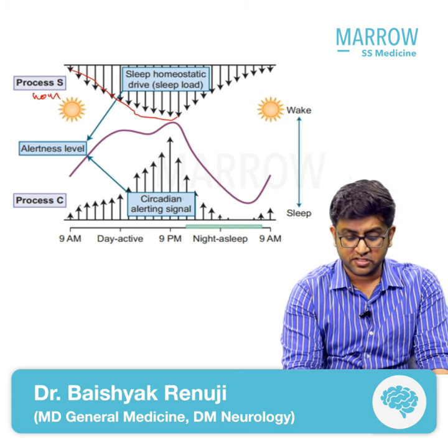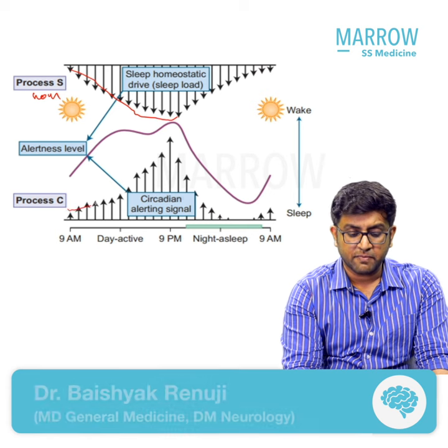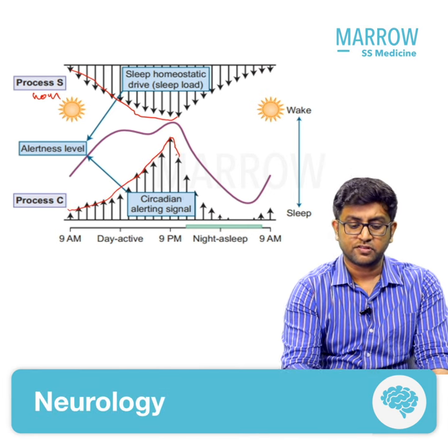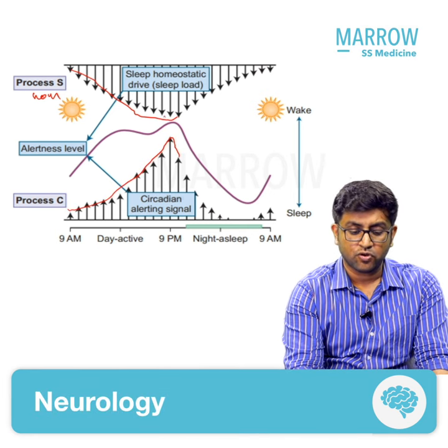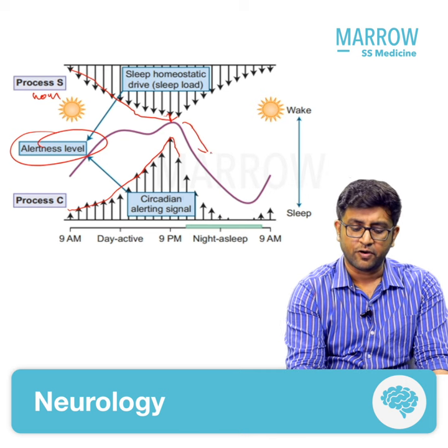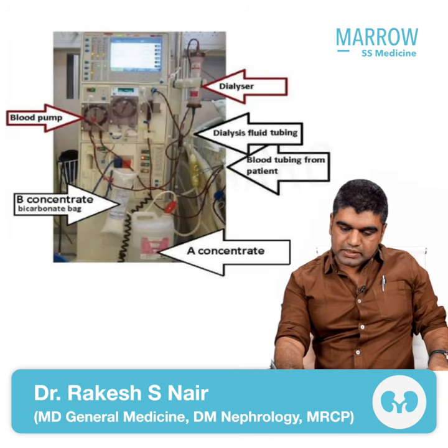This is homeostasis. As the day progresses, it keeps increasing. Sleepiness also has a circadian rhythm and also increases as the day progresses. At the point where both are at their peak, your alertness level will fall down and you'll go to sleep.